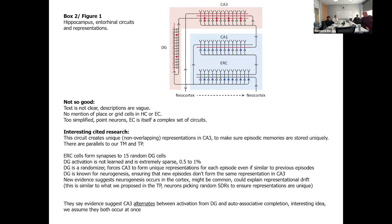There was another interesting thing: the cells in CA3 seem to alternate between two forms of activation — one being the randomization due to the dentate gyrus, and an auto-associative completion. This is exactly what we do in our temporal pooler: we form a sparse representation and then learn to auto-complete it so that it recognizes itself. Some suggestions indicate the cells don't do that simultaneously — they alternate on cycles between randomization and auto-completion. There was some evidence for that.